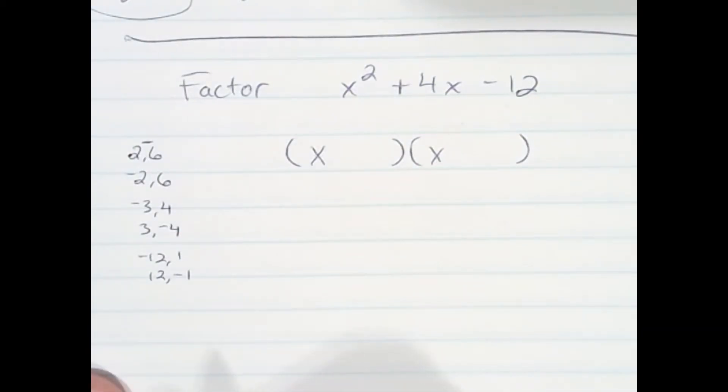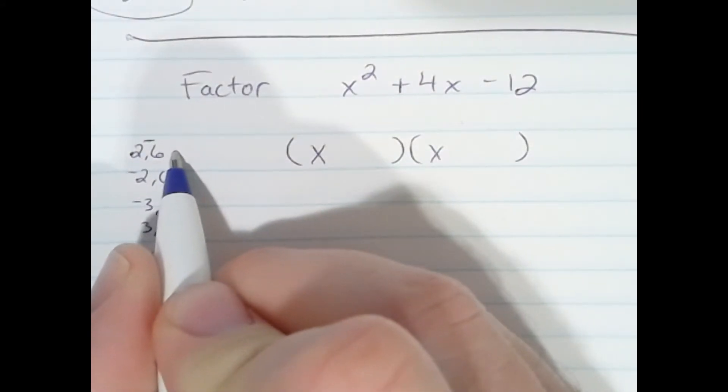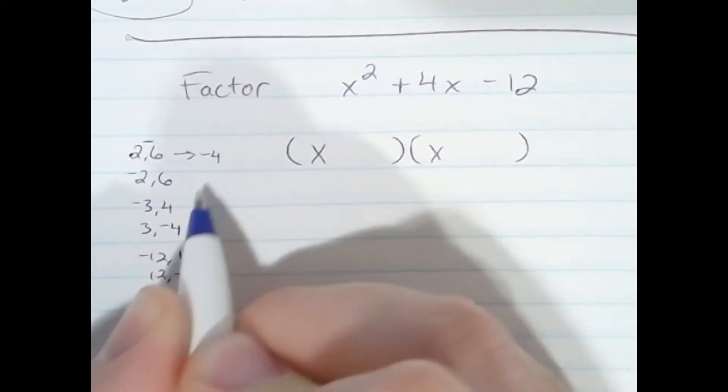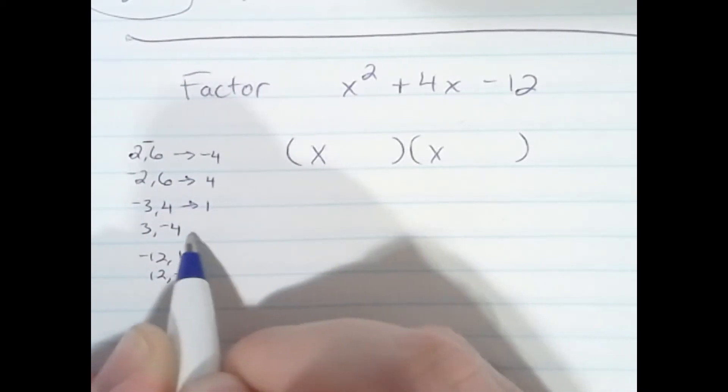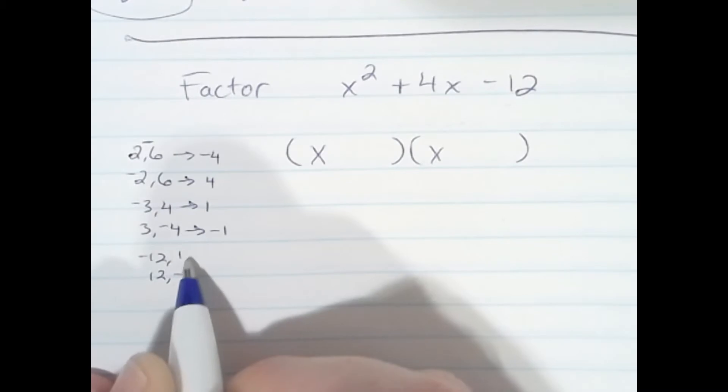And let's go through the sum of each of these. This gives us a negative 4 if we add them together. This gives us a positive 4, positive 1, negative 1, negative 12, negative 11, and positive 11.